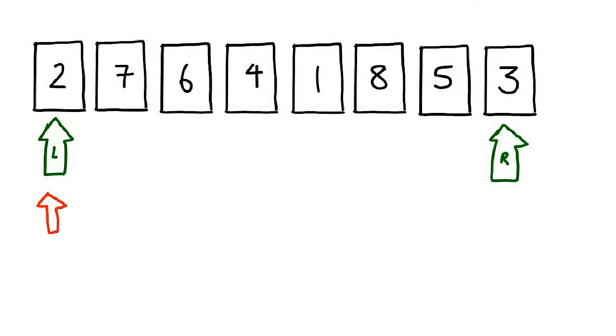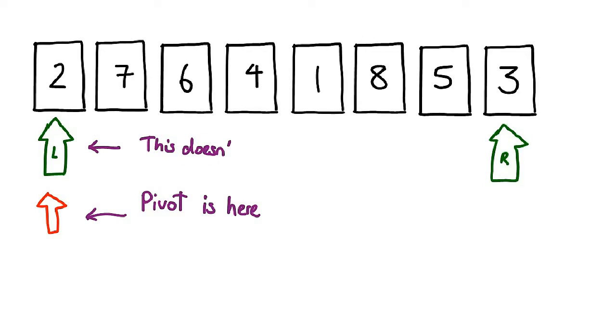Now, that's the point I left hanging earlier on: the matter of which pointer is moving and what direction it moves in. You notice that from time to time, as elements are being swapped, the pivot jumps from the left pointer to the right pointer and back. Here's the deal: whichever pointer — left or right — that has the pivot attached to it does not move. It is the other pointer that moves. With regard to the direction of movement, the pointer that is free to move always moves towards the other pointer. So it's basically just the two pointers taking turns to move in towards each other.